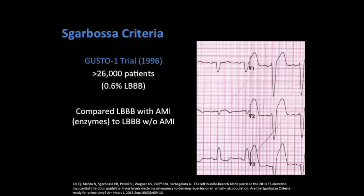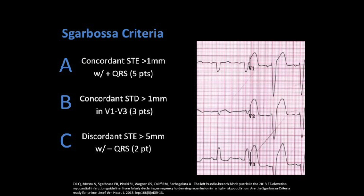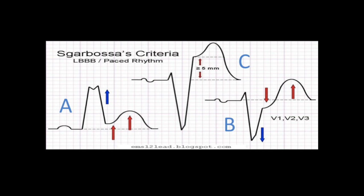The Sgarbossa criteria was developed back in the 90s. They looked at people with left bundle branch block both with and without myocardial infarction, and tried to find different characteristics within the ECG to differentiate between the two groups. They came up with three categories. Category A was concordant ST elevation greater than 1 mm with a positive QRS — concordant meaning the main axis of the ST elevation goes in the same direction as the main axis of the QRS. Category B was concordant ST depression greater than 1 mm in V1 through V3. Category C was discordant ST elevation greater than 5 mm with a negative QRS. Categories A and B are concordant to the QRS vector; Category C is discordant.